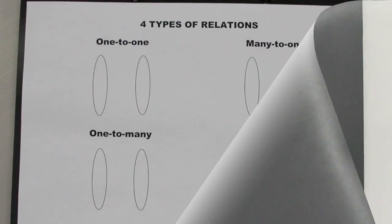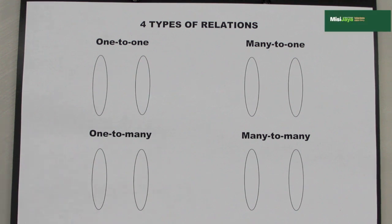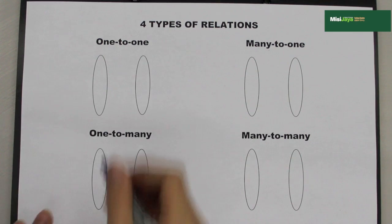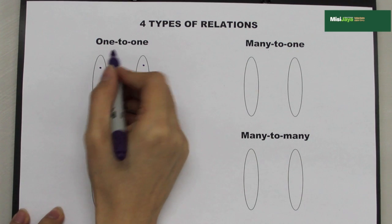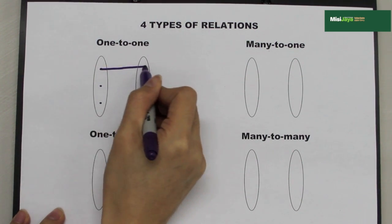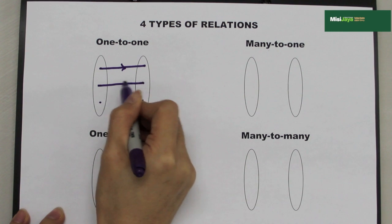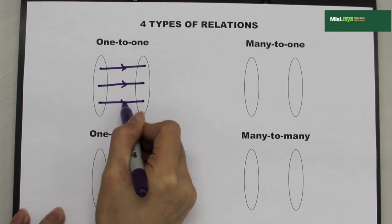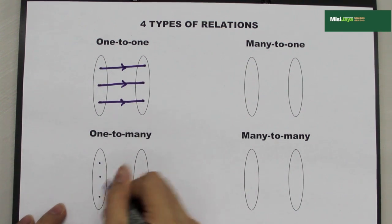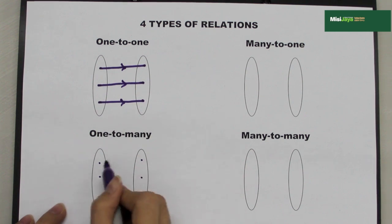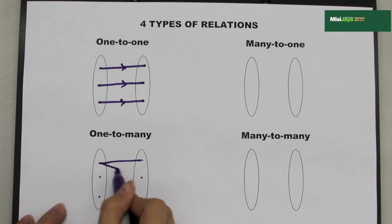We have 4 types of relations. First, 1 to 1 relation, which means that 1 object has only 1 image. Next, 1 to many, which means that 1 object has more than 1 image.